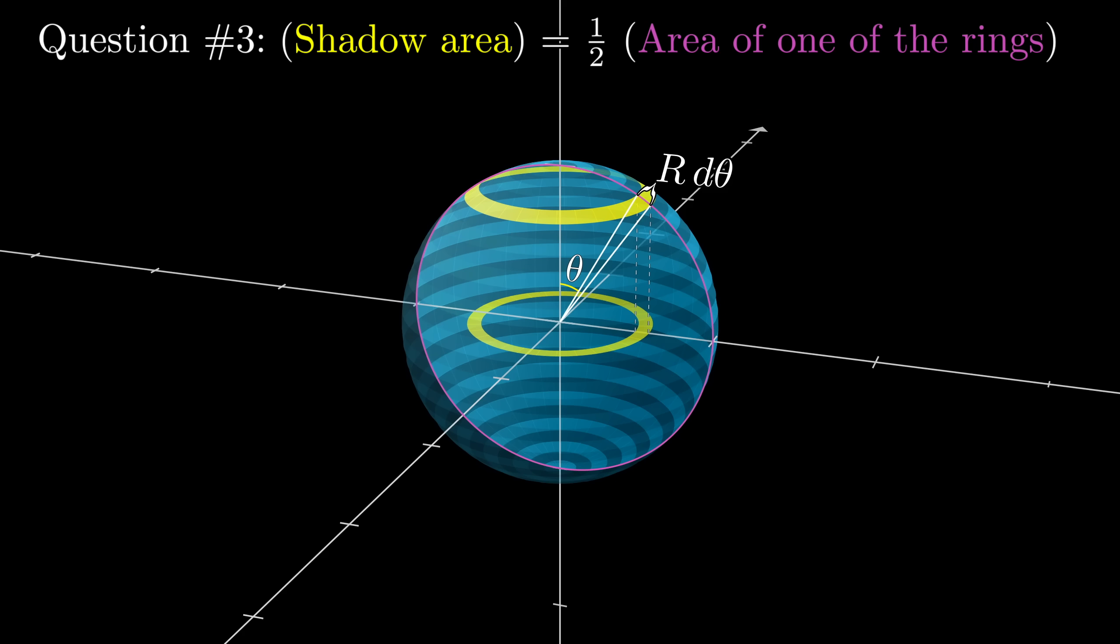Question number three, and this is really the heart of it. Each one of these rings' shadows has precisely half the area of one of the rings on the sphere. It's not the one that's an angle theta straight above it, but another one. The question is, which one?